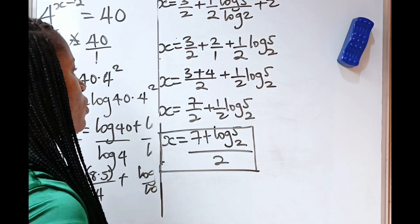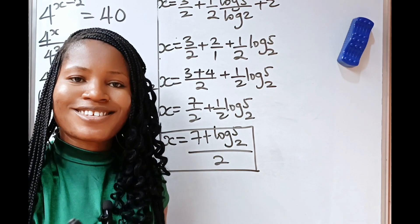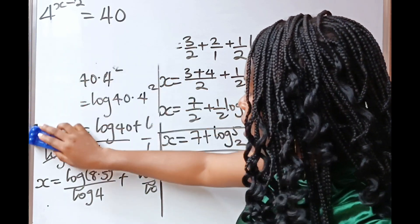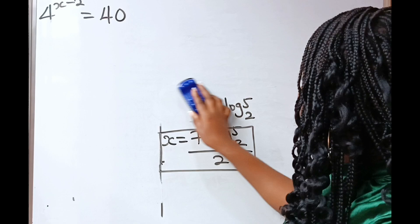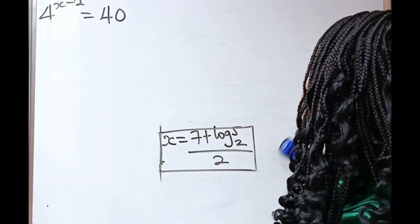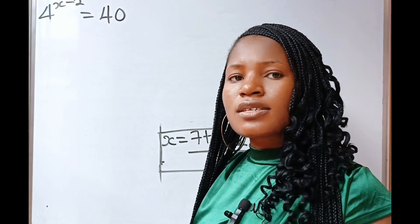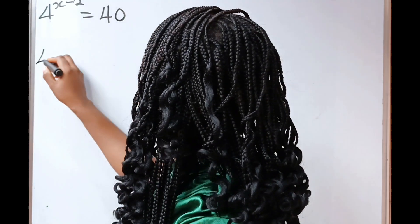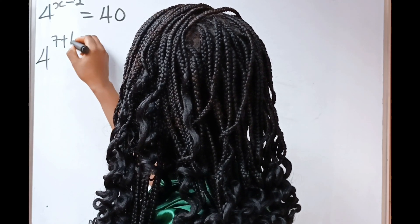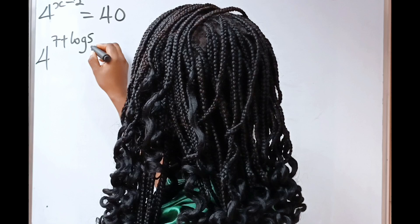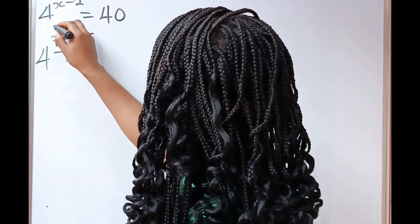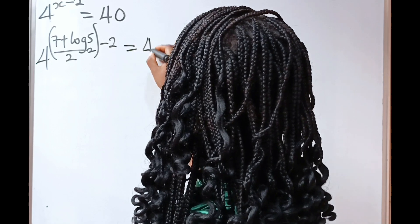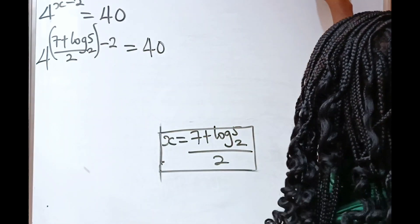Now, this is the value of x. The most interesting aspect of this video is here — let's prove that the answer we got is correct. So, x is equal to 7 plus log 5 base 2, divided by 2. We have 4 to the power of (7 plus log 5 base 2) divided by 2, minus 2, is equal to 40.